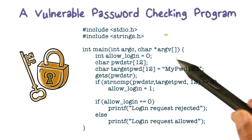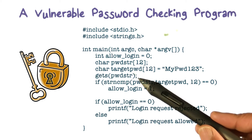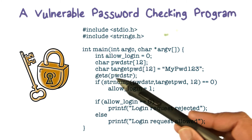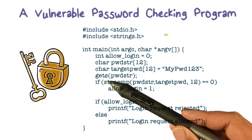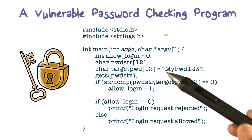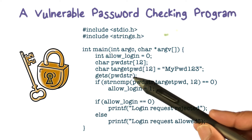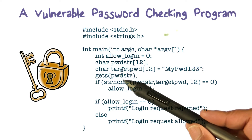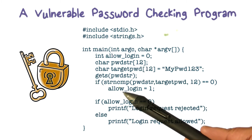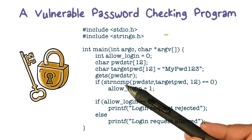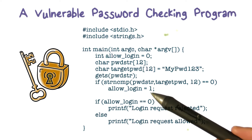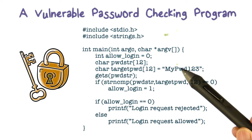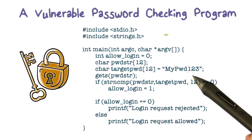These are the local variables declared within this function. The code is very simple — it's saying I'm going to get a string. gets() is a read-string function; it gets a string that you type. We're going to read that string into the local variable pwdstr that we declared, then do a comparison of that string against our target password.